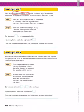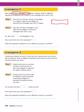In step one, Sam sent an unknown number of messages M in August. So we start with a bar, just like we did in Investigation 1, and this time we'll use M for the messages he sent in August.